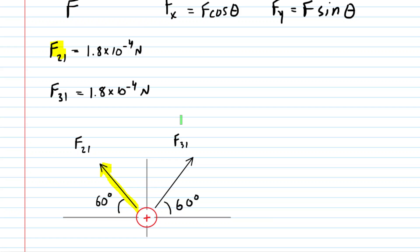When you plug that into your force table, you would take your magnitude, which was the 1.8 times 10 to the minus 4 newtons, and then multiply that by the cosine of 120 degrees. For the y component, you simply take the magnitude and multiply it by the sine of that same angle. So again, 120 degrees.